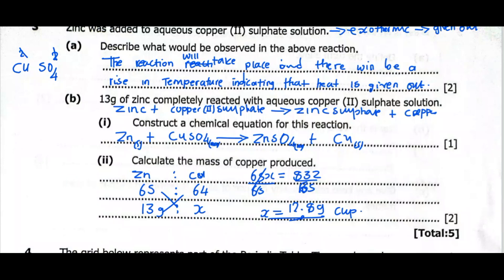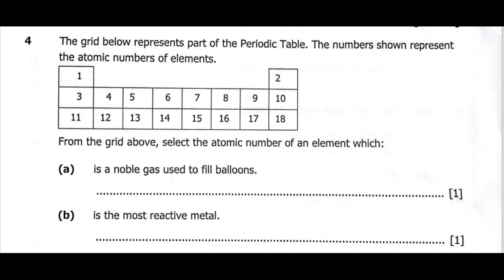Now let's move on to question 4. The grid below represents part of the periodic table, where the numbers shown represent the atomic numbers of elements. The atomic number is the total number of protons found in an atom of a given element. Looking at the first column, this is group 1, then group 2 — writing the configuration gives us 2, 2. Then group 3, 4, 5, 6, 7, and we have group 0 here.